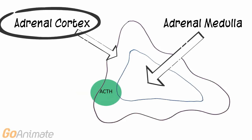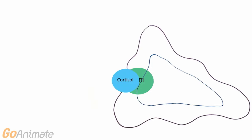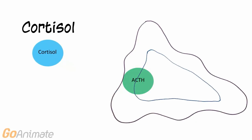ACTH targets the adrenal cortex. ACTH facilitates the release of cortisol from the adrenal cortex.